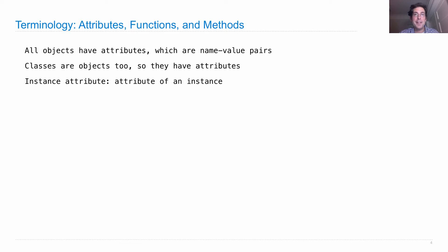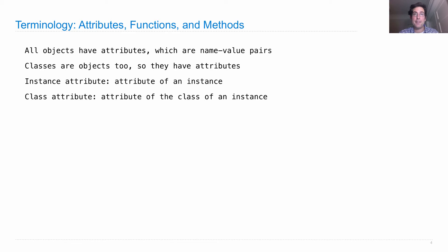An instance attribute is an attribute that's on the instance itself — something particular to that one thing. A class attribute is actually an attribute of the class of the instance, so it's still a descriptive property of that thing, but it's something shared among all instances of the class. That's the description of what an instance attribute and a class attribute are.